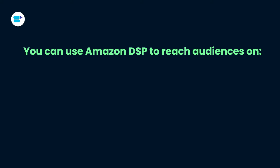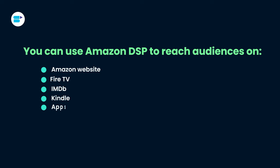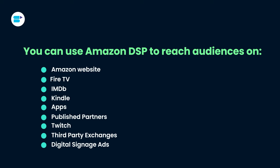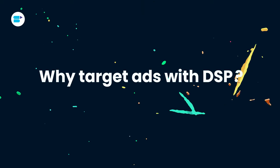Let's talk about the places where you can reach your audiences using the Amazon DSP. It's a pretty extensive list: the Amazon website itself, Fire TV, IMDb, Freevee, Kindle, various applications, published partners, Twitch, third-party exchanges, and even digital signage ads.